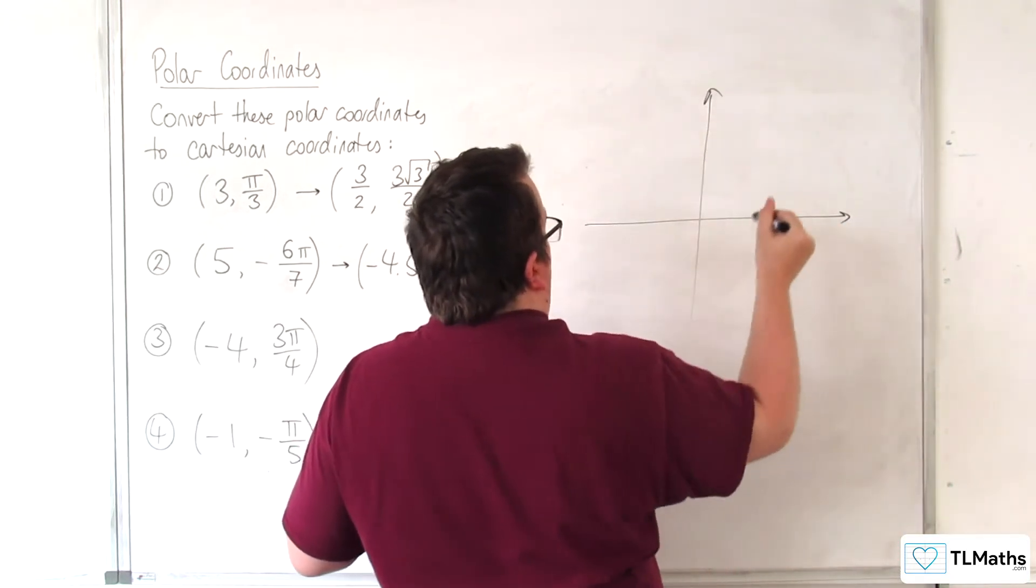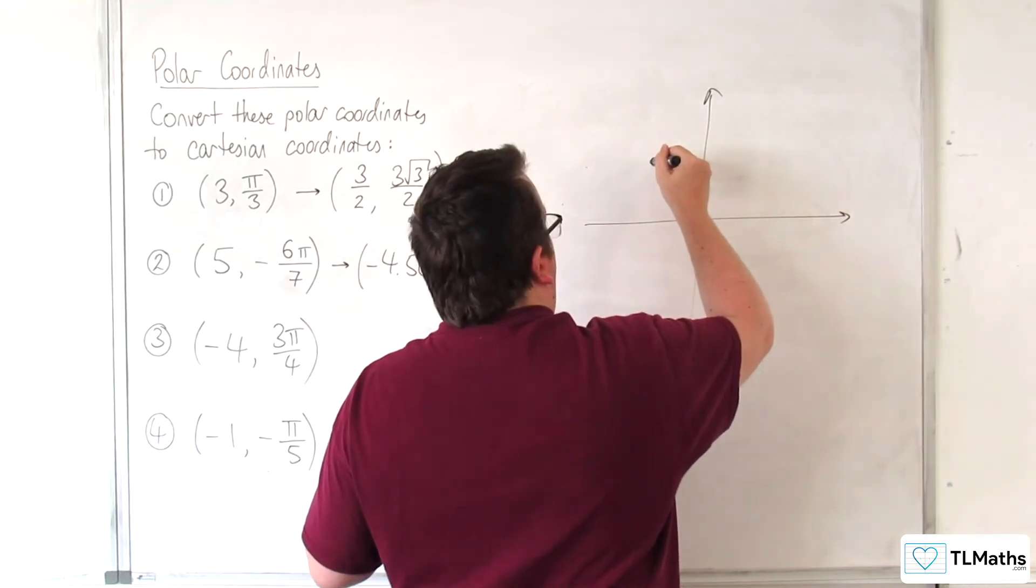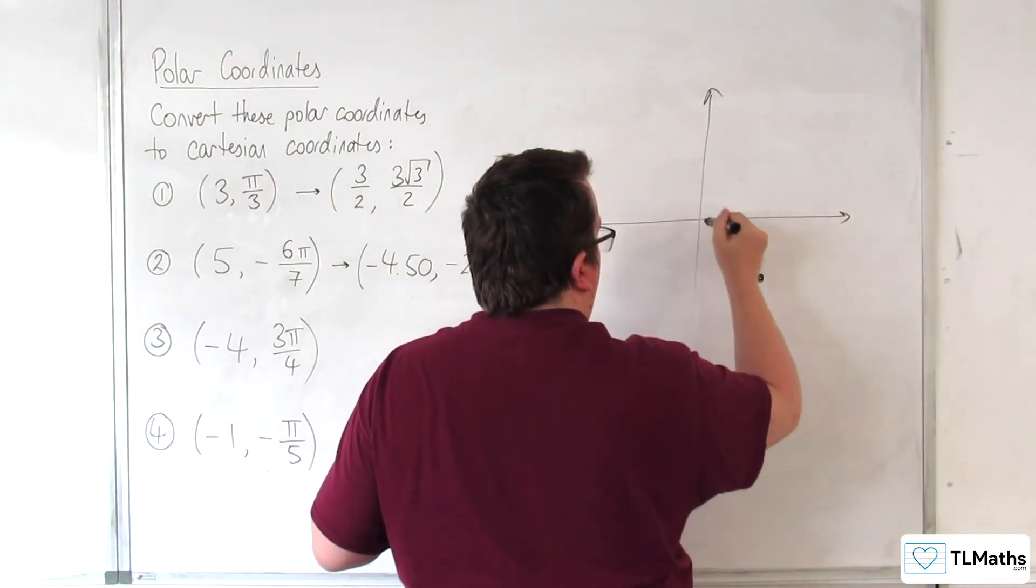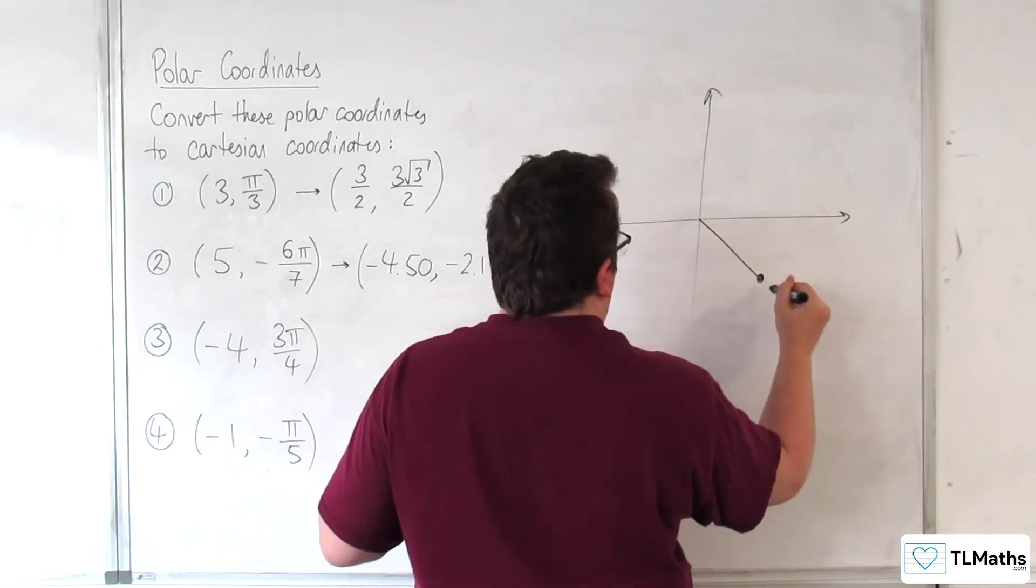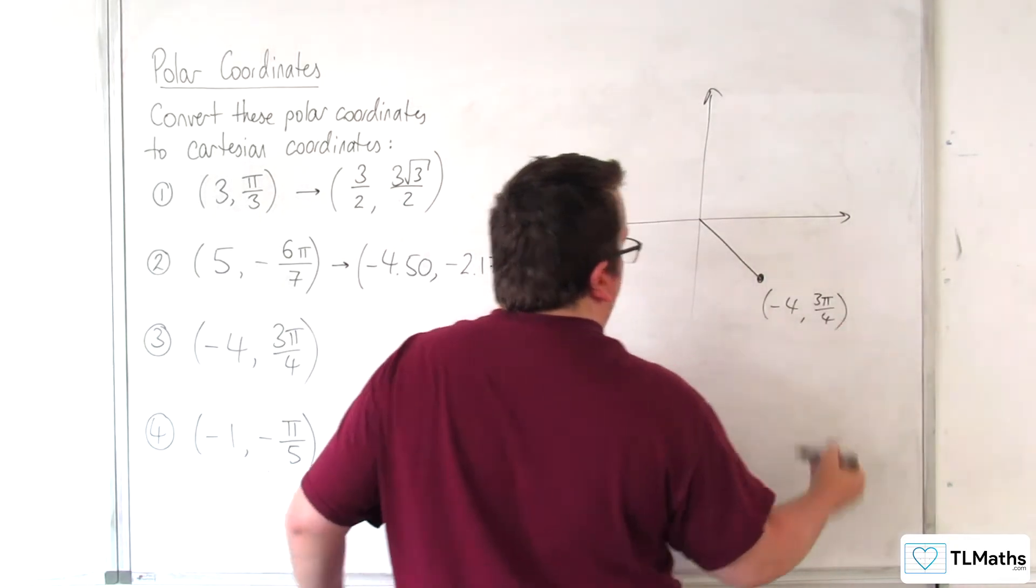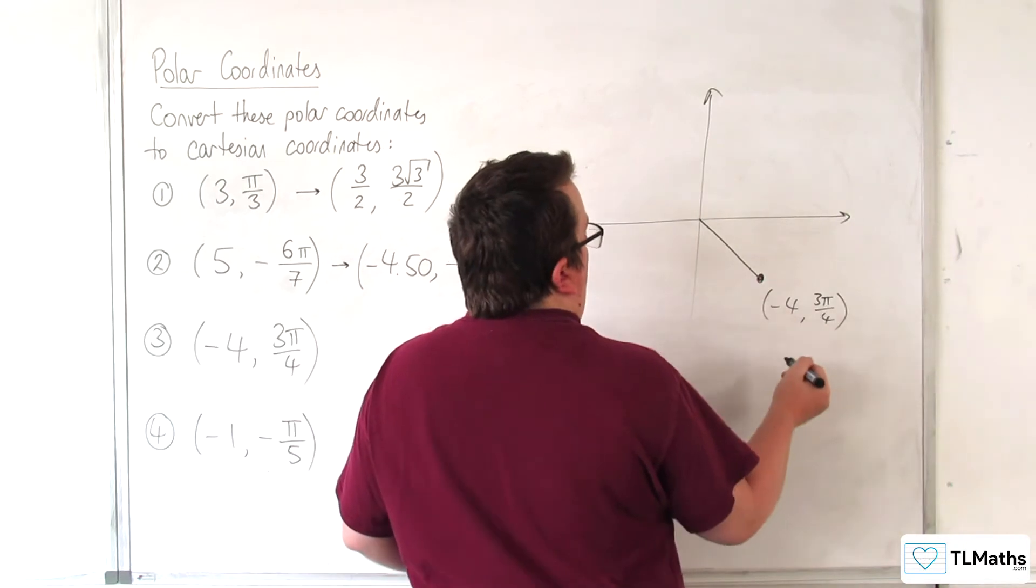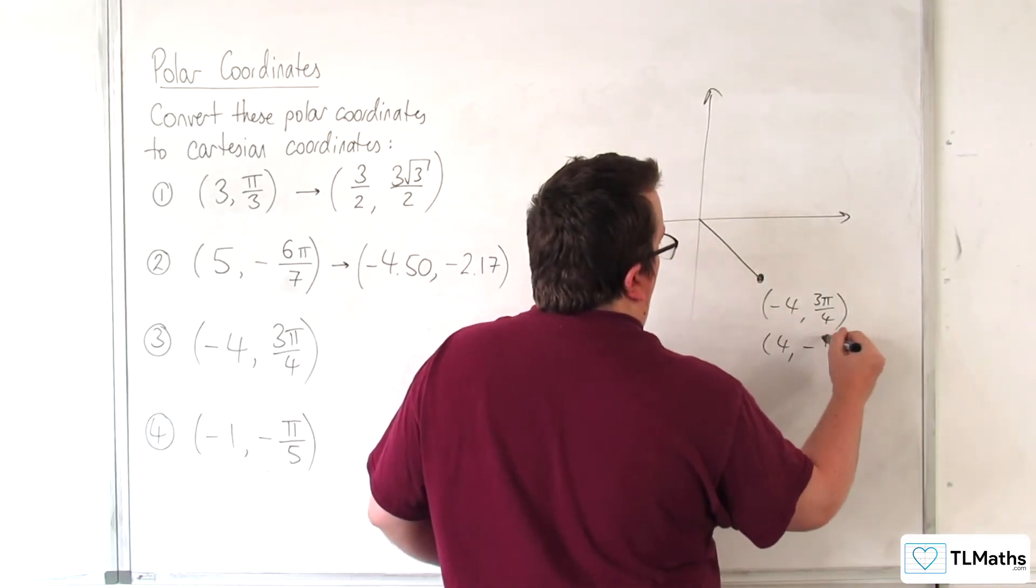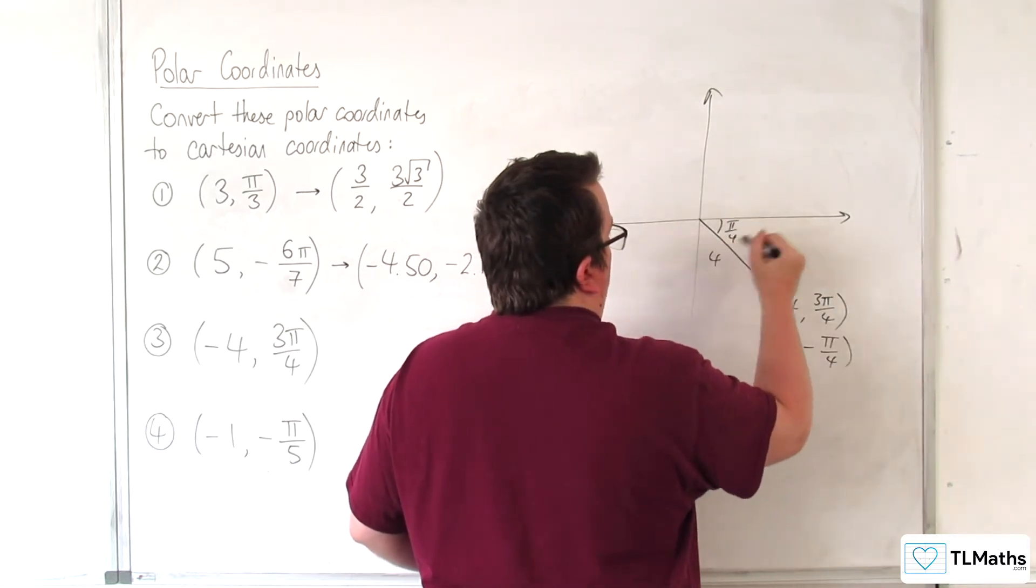Okay. So, 3 pi over 4 would put us around here, but we're measuring minus 4, so we must be down here. Okay. So, this must be minus 4, 3 pi over 4. Now, alternatively, this could be written as 4 minus pi over 4. So, that's your pi over 4, it's distance 4.